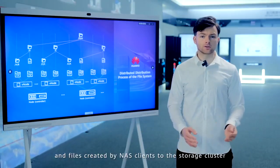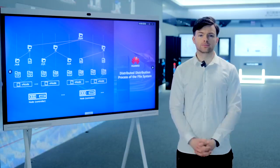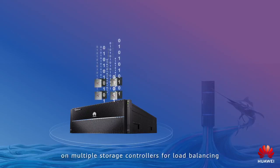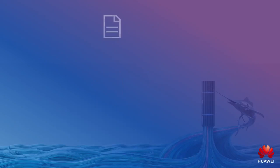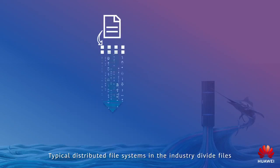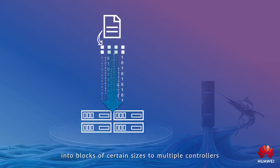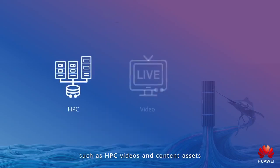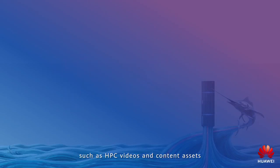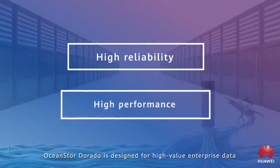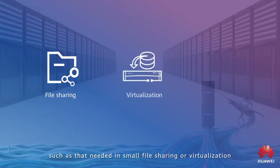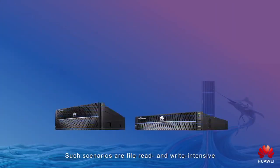The storage pool layer provides underlying space allocation based on the FlashLink intelligent algorithm. How does the OceanStore Dorado file system evenly write directories and files created by NAS clients to the storage cluster? The distributed file system distributes data to multiple CPUs on multiple storage controllers for load balancing. Typical distributed file systems in the industry divide files into blocks of certain sizes across multiple controllers. Such file-slicing based distribution solutions are applicable to large file scenarios such as HPC, videos, and content assets. OceanStore Dorado is designed for high-value enterprise data that requires high reliability and performance, such as small file sharing or virtualization.